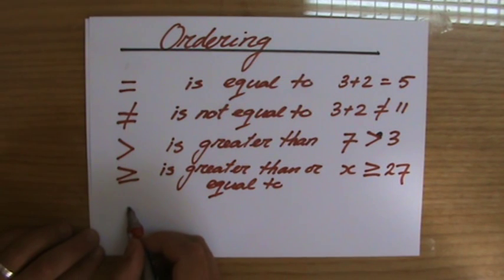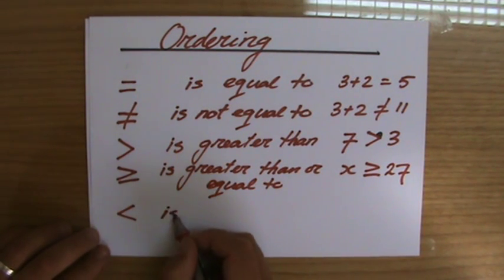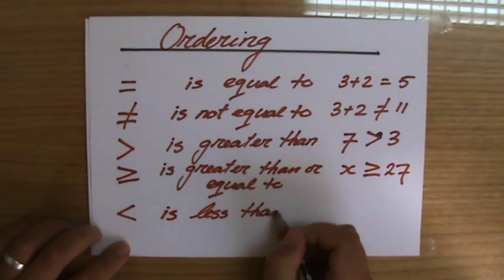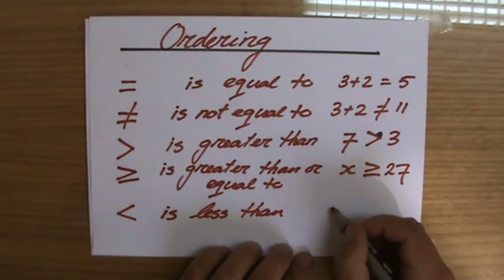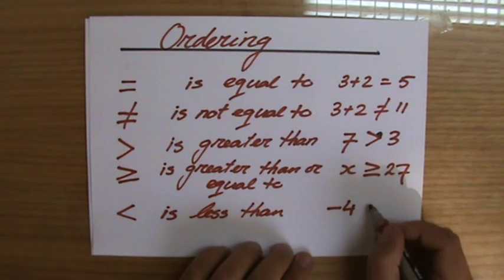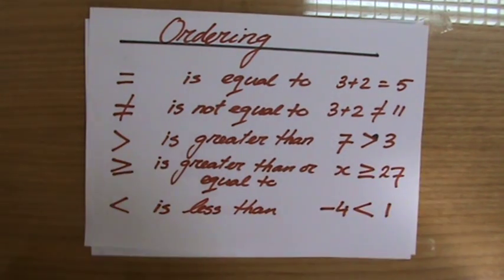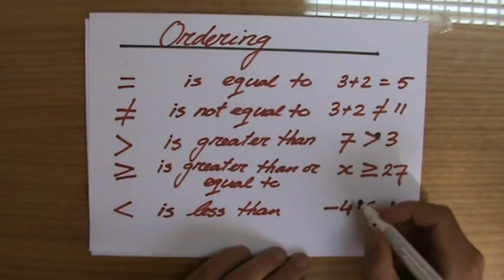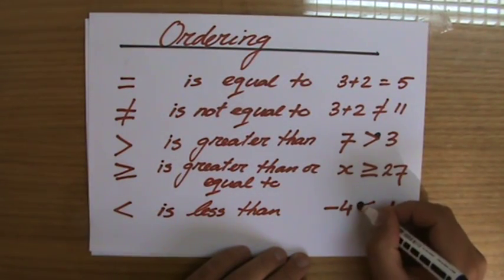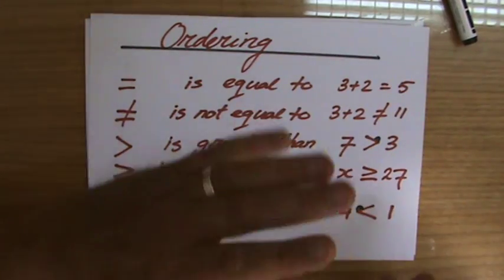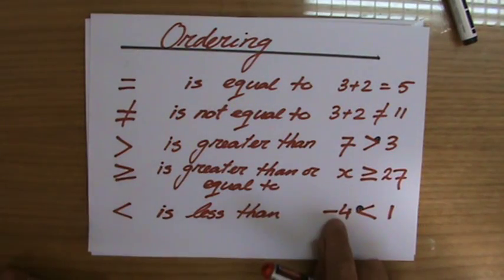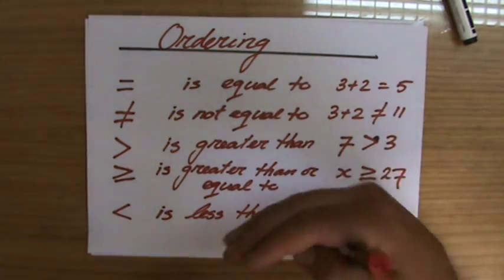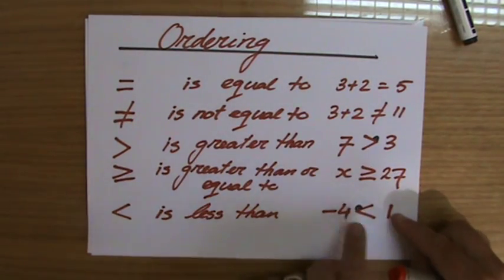We can turn this sign around and this means is less than. So for instance, minus four is less than one. Do we agree with that? And again the crocodile eats the larger number. One is bigger than minus four, so the crocodile always eats the larger number. Minus four is less than one, or if you look from the other way you could say well one is larger than minus four.